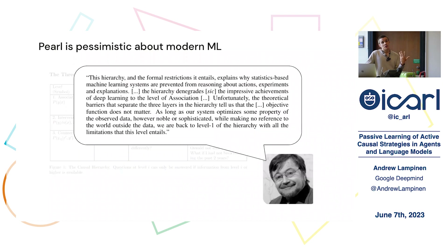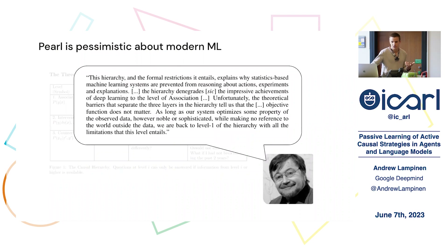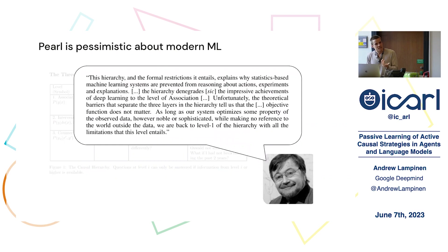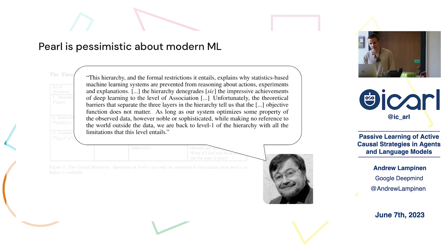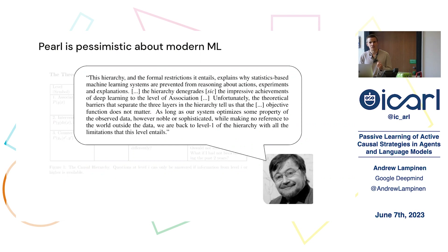Pearl, because of this hierarchy, has expressed fairly pessimistic opinions about modern machine learning. In particular, he's argued that modern machine learning is statistics-based and therefore prevented from reasoning about things like actions, experiments, and explanations — and that the impressive achievements of deep learning are just at the level of pure association.